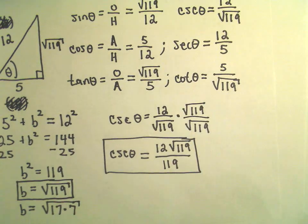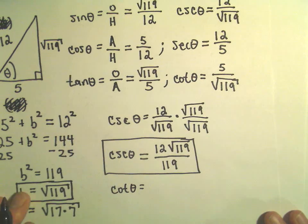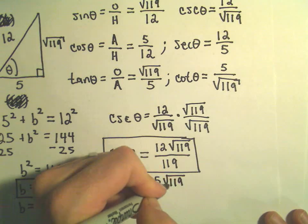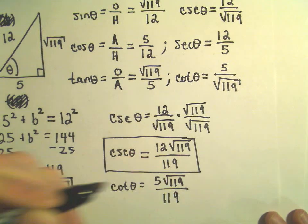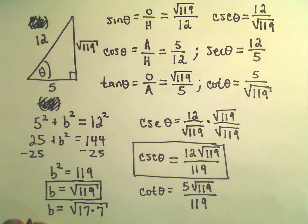The same way we could do cotangent of theta, after you rationalize the denominator, you would get 5 times the square root of 119 over 119. And that doesn't really reduce at all.